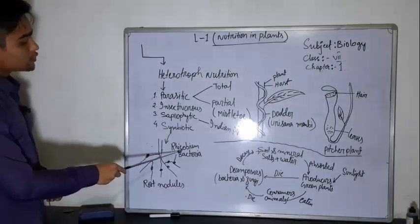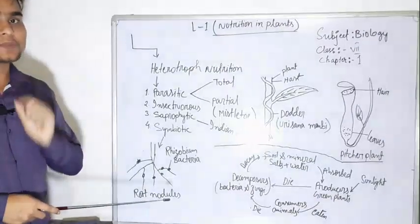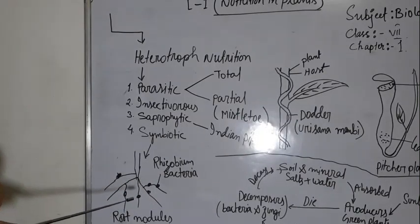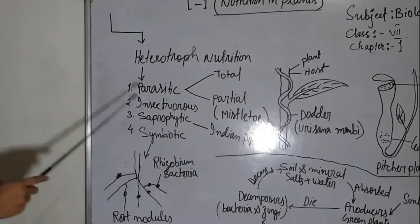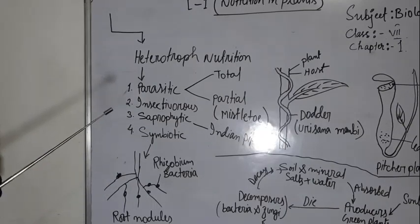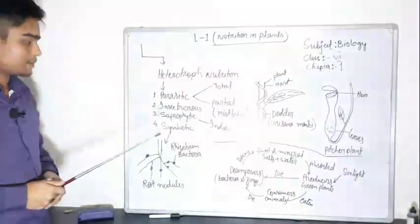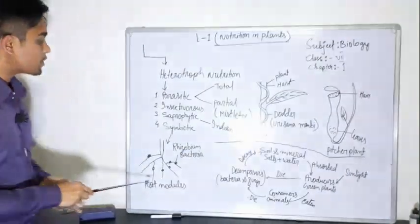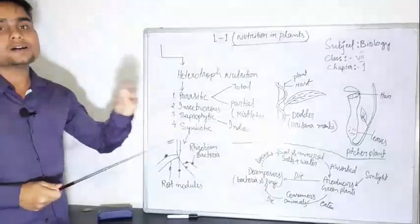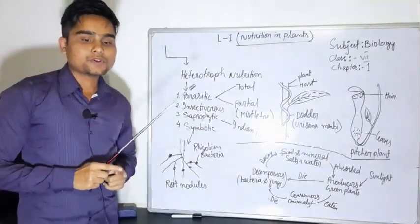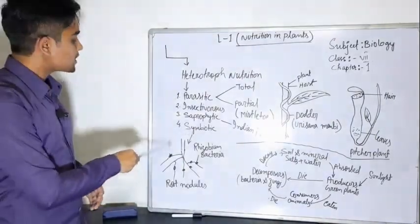An example is Rhizobium bacteria with leguminous plants such as pea and beans. The Rhizobium bacteria fix atmospheric nitrogen within the leguminous plant. This is a symbiotic relationship where both the plant and the bacteria benefit from each other.